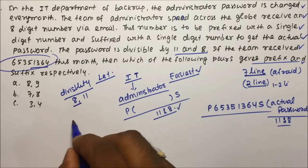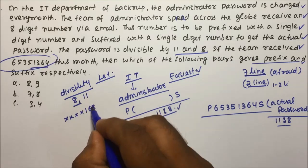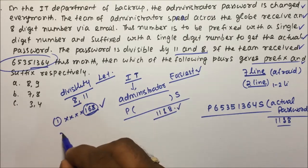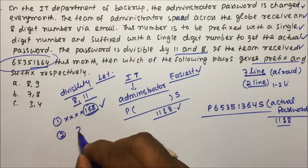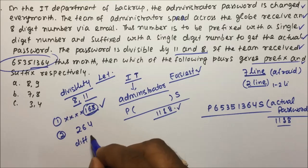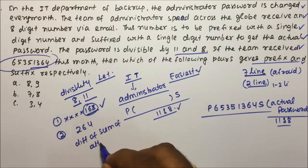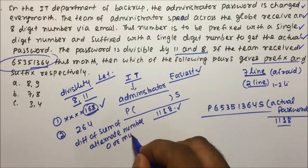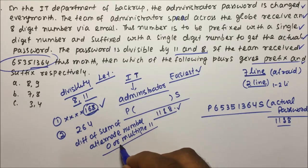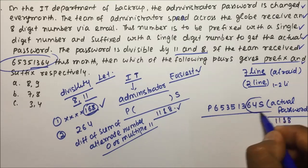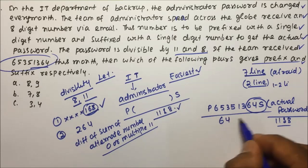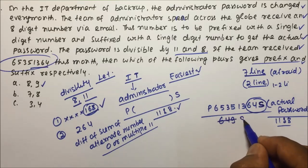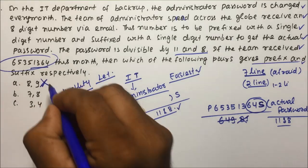For divisibility by 8: the last three digits must be divisible by 8. For example, if the last three digits are 648, the number is divisible by 8. For divisibility by 11: take the number, find the difference of the sum of alternate digits — if it is 0 or a multiple of 11, the number is divisible by 11. Now, checking option A: the suffix 9 makes the last three digits not divisible by 8, so option A is eliminated.